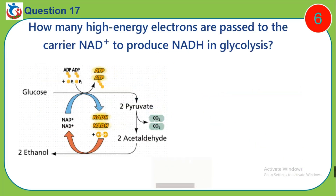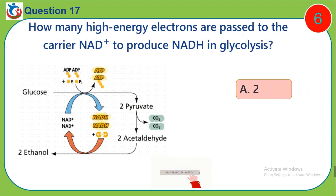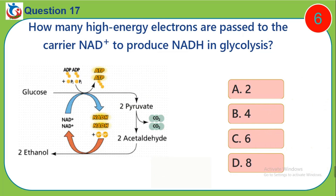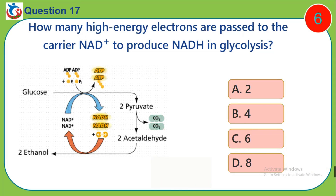Question 17. How many high energy electrons are passed to the carrier NAD+ to produce NADH in glycolysis? A, 2. B, 4. C, 6. D, 8.